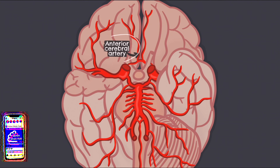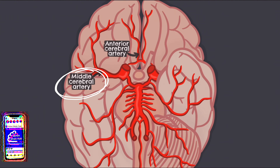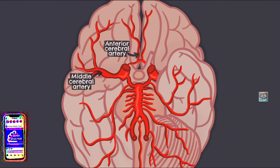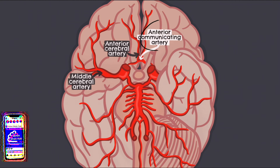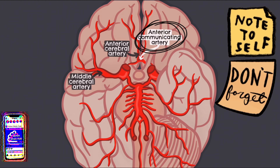Posteriorly and laterally we have the middle cerebral arteries. These are the most common pathologically affected blood vessels in the brain. These arteries supply blood to the majority of the lateral surface of the brain hemispheres, including the primary motor and somatosensory cortical areas.